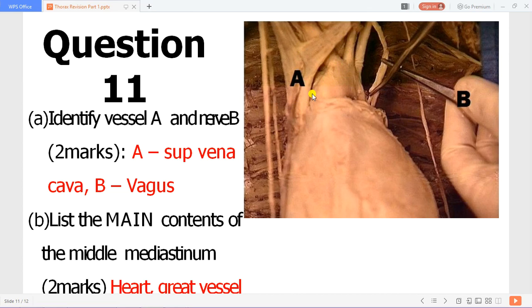The nerve labeled B is the vagus nerve. The main contents of the middle mediastinum include the heart and the great vessels.